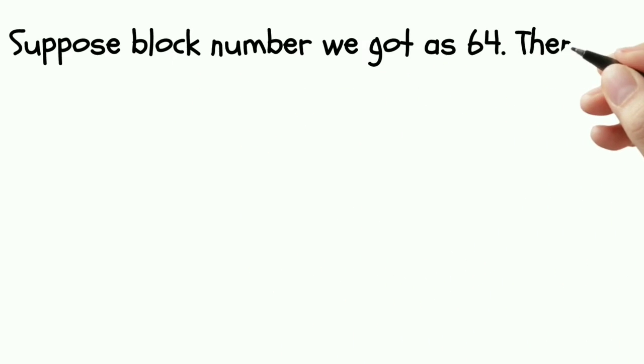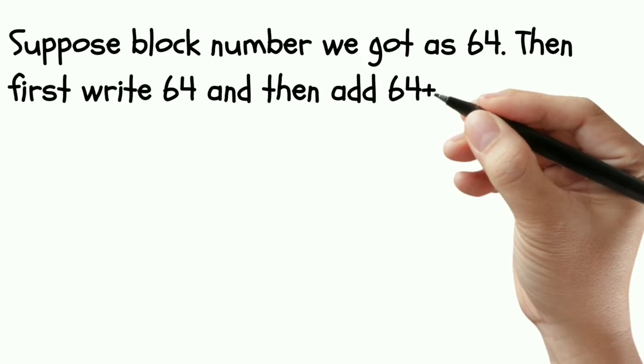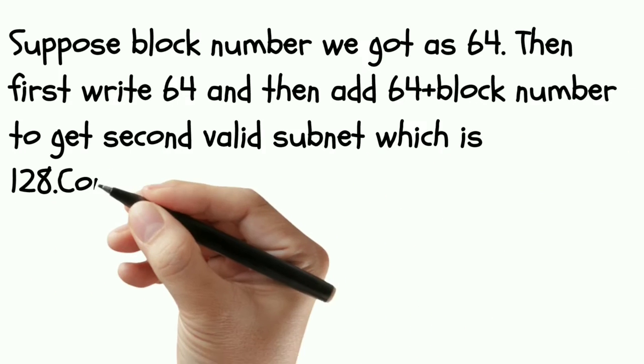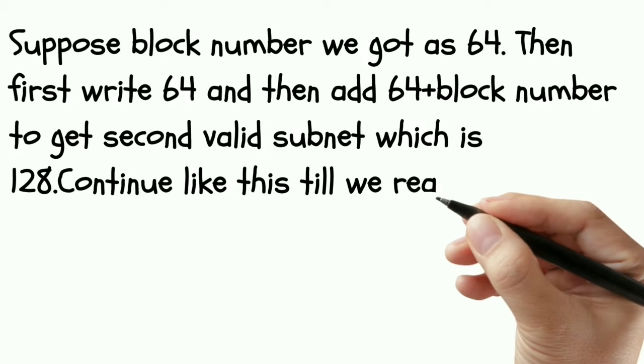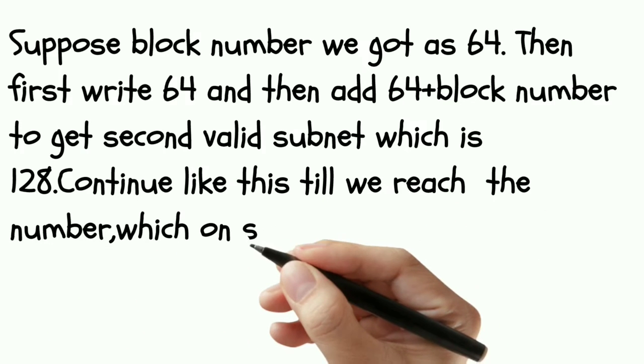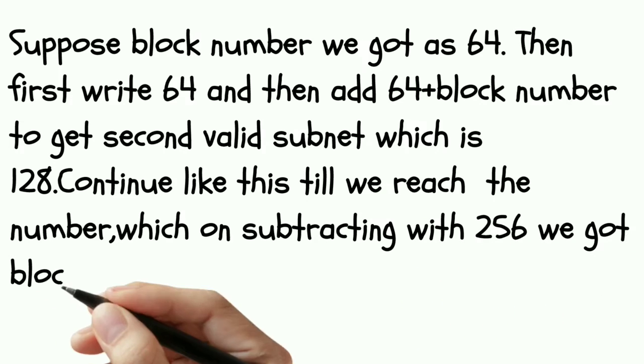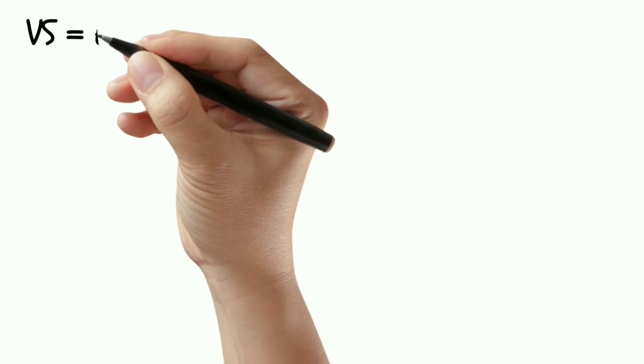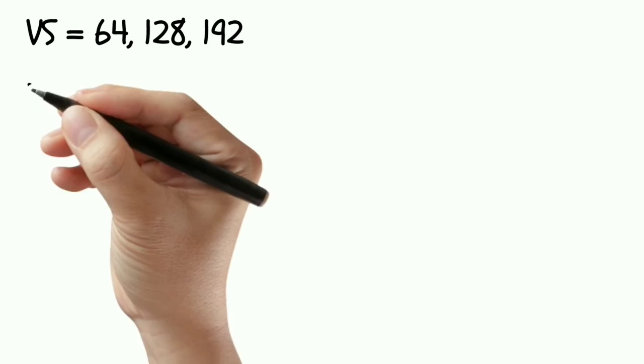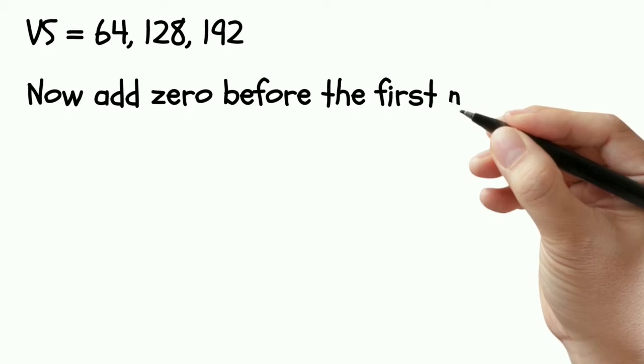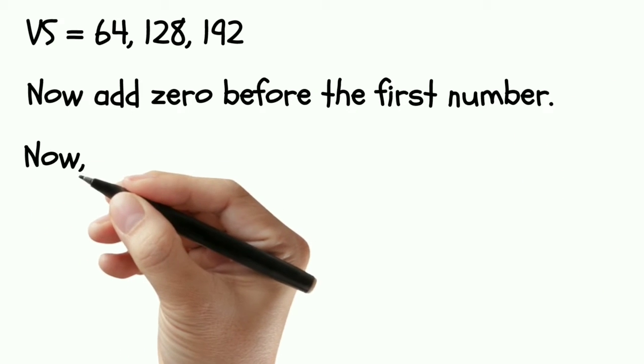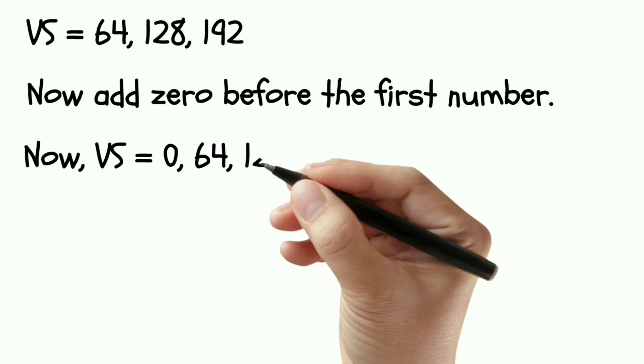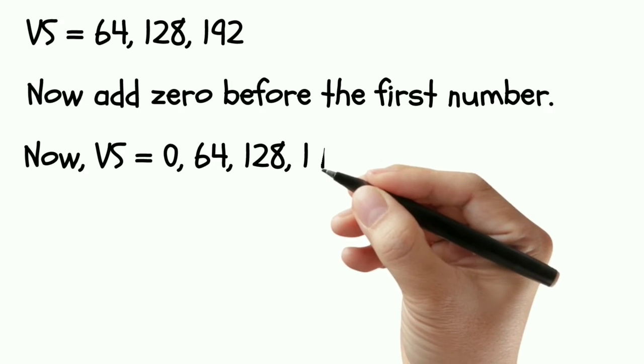Suppose block number we got as 64. Then first write 64 and then add 64 plus block number to get second valid subnet which is 128. Continue like this till we reach the number which on subtracting with 256 we got block number which in this case is 192. So valid subnet is 64, 128 and 192. Now add zero before the first number. So now final valid subnet is 0, 64, 128 and 192.